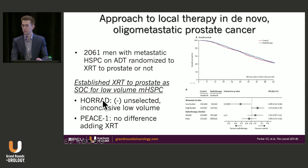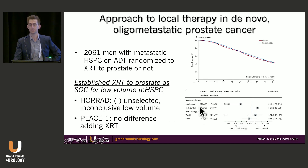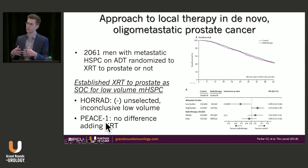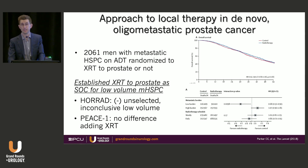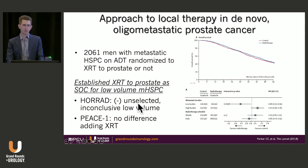I think there's more equipoise around the question of radiation to the prostate than is currently being discussed. The HORAD study, published around the same time as Stampede, did not meet its primary endpoint for the unselected cohort, looked very similar to Stampede, and was actually inconclusive in the subgroup analysis by volume — it was only positive when combined in a meta-analysis with Stampede. PIECE-1, our latest addition, asked whether adding radiation to the prostate to a doublet of ADT plus abiraterone makes a difference. It has not been published yet, but has been presented, and there was no difference for radiation. So while I still use radiation to the prostate, I think there is significant equipoise around this question.